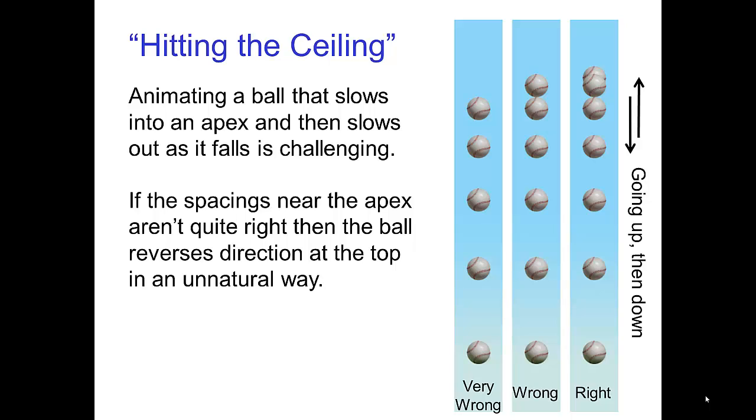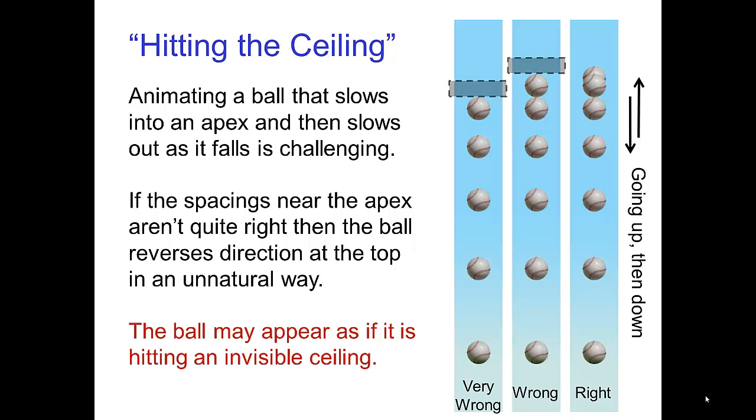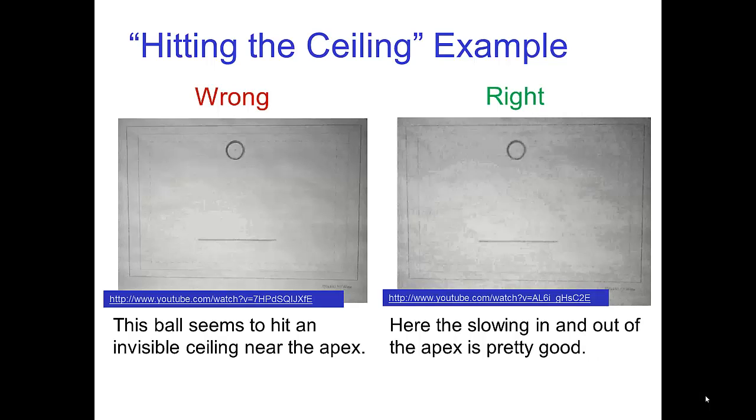Animating a ball that slows into an apex and then slows out as it falls is challenging. If the spacings near the apex aren't quite right, then the ball reverses direction at the top in an unnatural way. The ball may appear as if it's hitting an invisible ceiling. In these examples, only the one on the right has the correct spacings into and out of the apex. In the animation on the left, the ball seems to hit an invisible ceiling near the apex. The spacings for the motion into and out of the apex are pretty good for the example on the right.